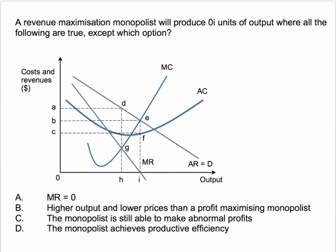The correct answer to this question is D — the monopolist achieves productive efficiency — that is incorrect. Let's work through the answers.